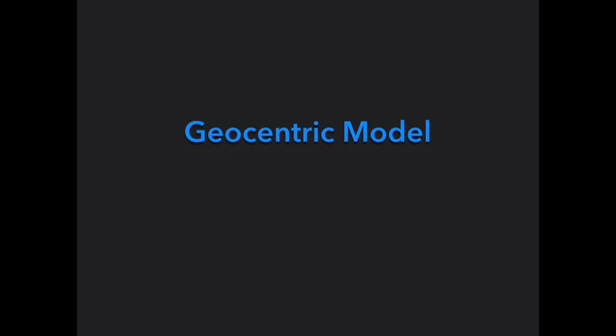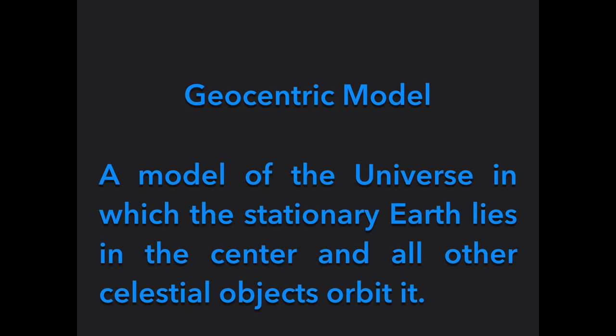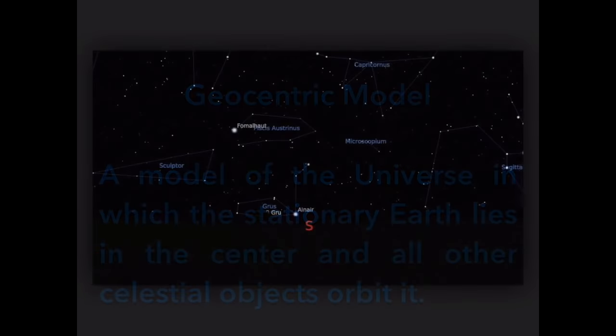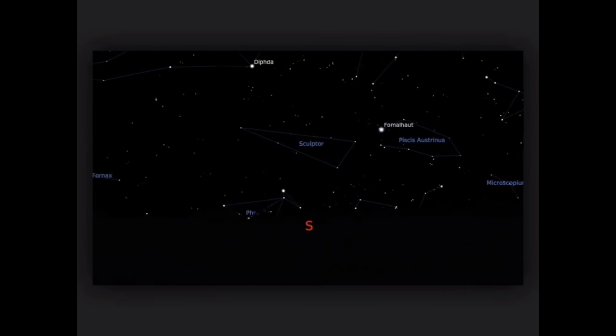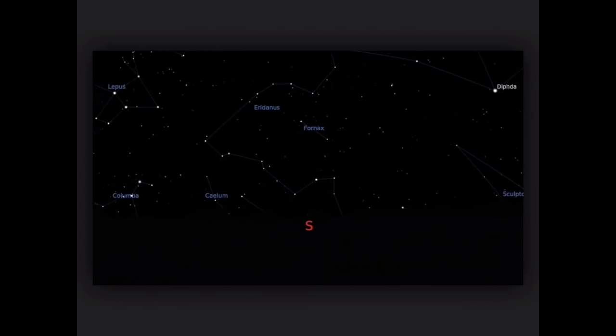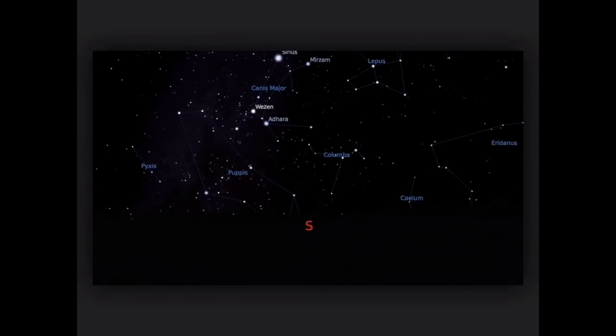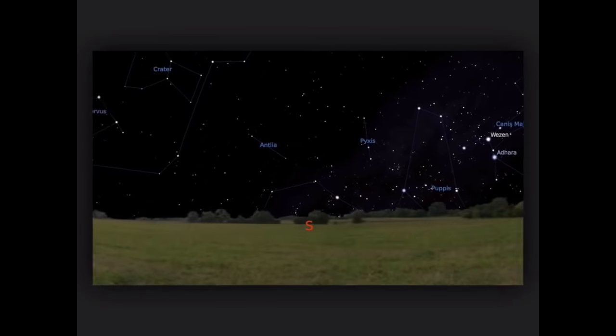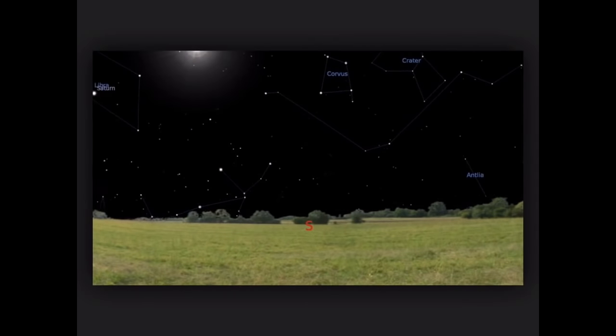In this model, Earth is stationary and lies in the center, not moving. All other celestial objects orbited. When we think about apparent daily motion, that fits, that makes sense. You can see how Plato, Aristotle, and Ptolemy came up with that theory from looking at the night sky.